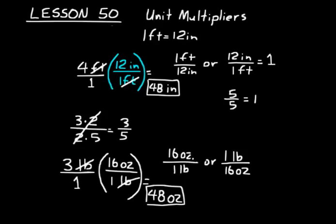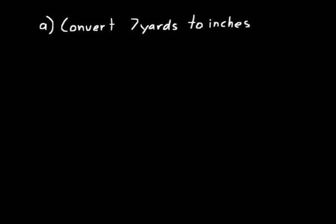Remember, you use a unit multiplier to convert from one unit to another. Let's do a practice problem: convert 7 yards to inches. Every time I do a unit conversion, I write down the units given first — 7 yards — and I know I want to convert to inches. We can use more than one unit multiplier. First, since there are 3 feet in a yard, we write 3 feet over 1 yard to cancel the yards.